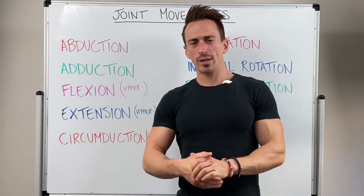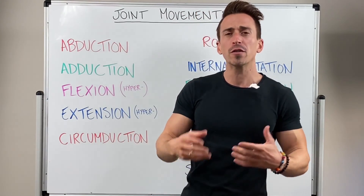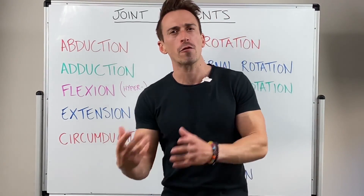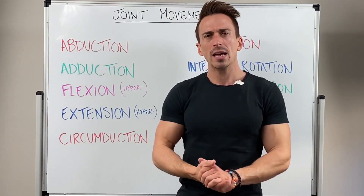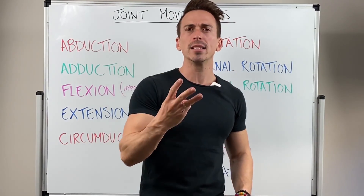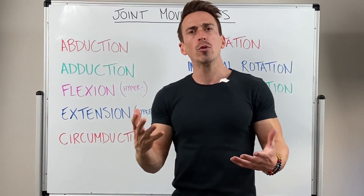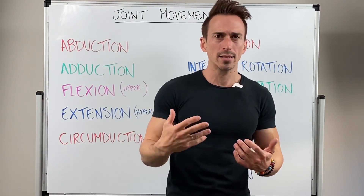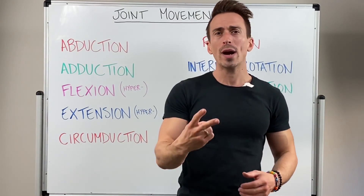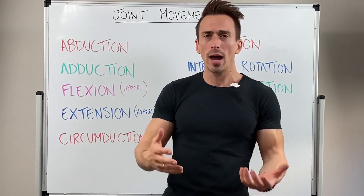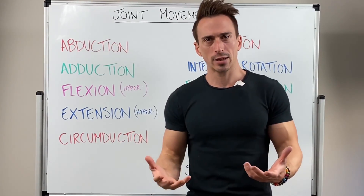The first thing we need to start off with is that different types of joints in the body have different degrees of freedom when it comes to their joint motion. There are only three axes in which a joint can move in. If a joint moves in one axis it's called uniaxial, if it's two axes it's called biaxial, and if it's three it's multiaxial.